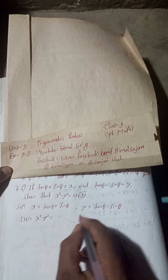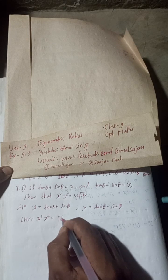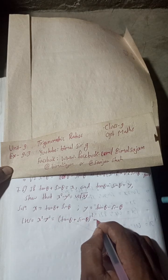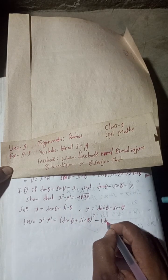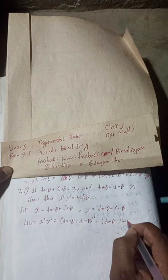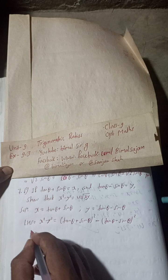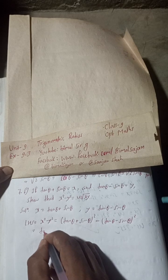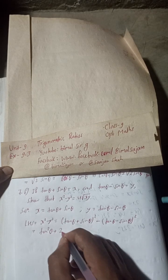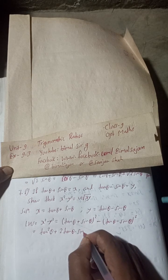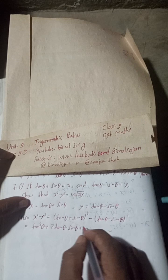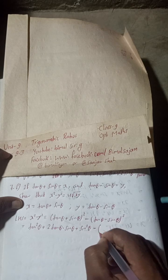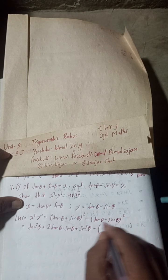LHS = x² − y² = (tan θ + sin θ)² − (tan θ − sin θ)². Expanding using (a + b)² formula: tan²θ + 2 tan θ sin θ + sin²θ minus the expansion of (tan θ − sin θ)².